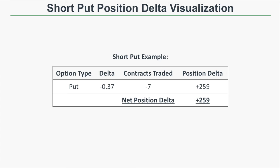At this point, you might be wondering if position delta is accurate. So let's look at a real option position that actually traded in the market and examine the position delta through time, looking at expected versus actual profit and loss. In this short put example, the initial delta of the short put is 0.37, and we're selling seven contracts, bringing our net position delta to plus 259. So we're expected to gain $259 for a $1 increase in the stock price and lose $259 for a $1 decrease.